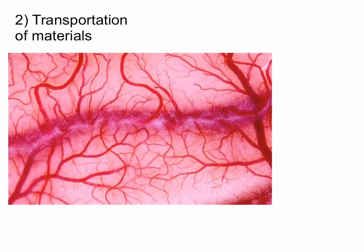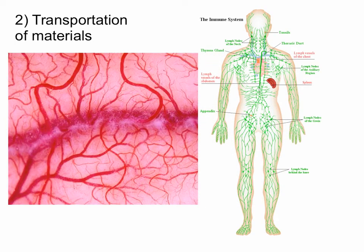Another function is transportation of materials. The cardiovascular system is the most obvious, where blood is responsible for transporting oxygen, carbon dioxide, nutrients, and waste products. The lymphatic system is also a transportation system for immune cells and for lymph, which is basically extracellular fluid. We'll talk more about that as we get into it.